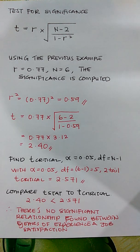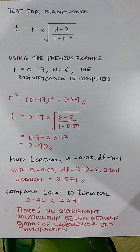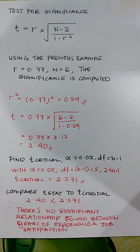Since there is no significant relationship, you do not need to report the magnitude or direction of the relationship. You don't need to say there is a strong positive relationship — when we say there is no significant relationship, it means no relationship, so you don't need to explain the strength or direction of the r value obtained. Thank you.